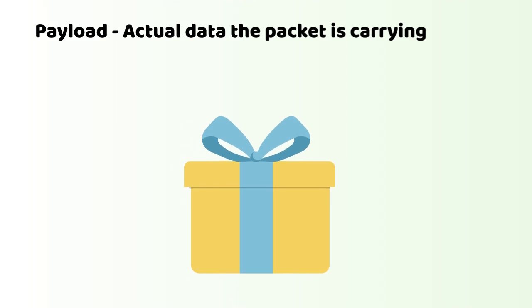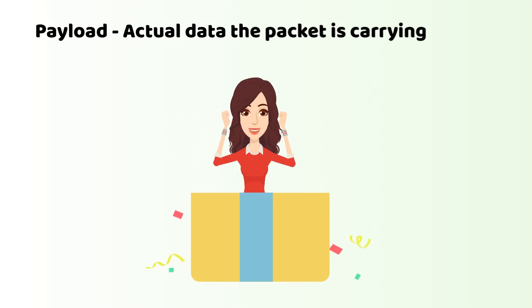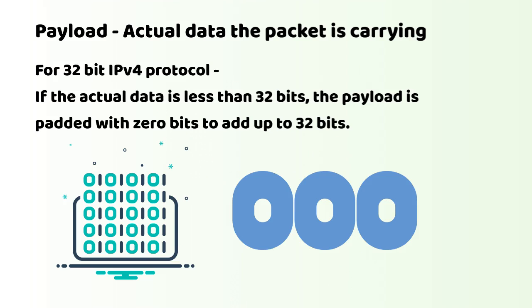Payload is the actual data that the packet is carrying to the destination. For a 32-bit IPv4 protocol, if the actual data is less than 32 bits, the payload is padded with zero bits to add up to 32 bits.